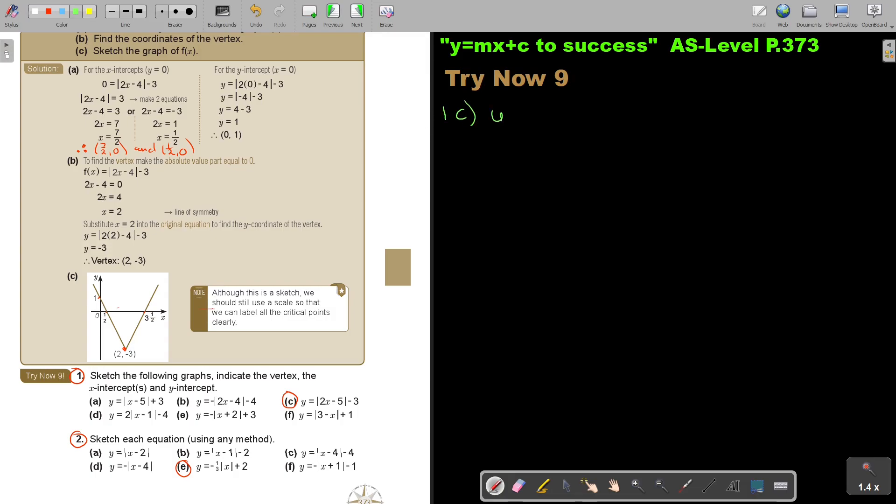Let's start with number 1c. So, first write it down. It's y equals 2x minus 5 minus 3. Let's first find my intercepts.